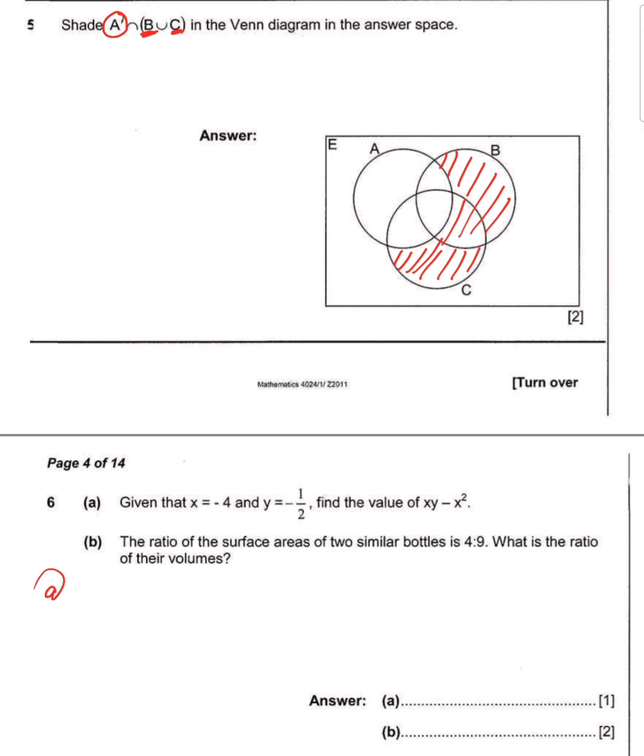So x is negative four, y is negative half. We have negative times negative, which gives us two. Two minus - remember that negative four is being squared, meaning you have 16. We've got two minus 16, which will give us negative 14.